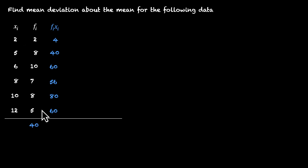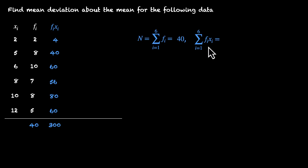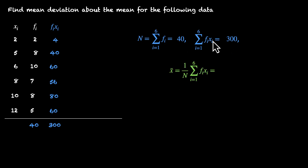So we have 40 values in our data set. The sum of all Fi·Xi values is: 40 plus 60 is 100, plus 56 gives 156, plus 4 is 160, plus 80 is 240, plus 60 is 300. So N = 40 and sigma Fi·Xi = 300, which means our mean is 300 divided by 40, that's 7.5.